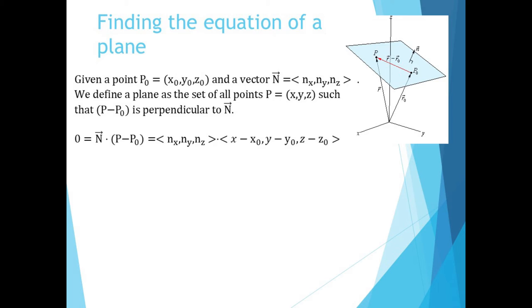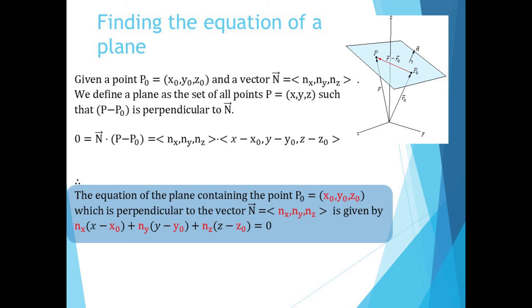For our first application of the cross product, we'll use it to find the equation of a plane containing three points. In 3D, we need a point on the plane and a vector perpendicular to the plane called the normal. A vector joining any point on the plane with our fixed point must be perpendicular to our normal. So if n equals nx, ny, nz, and p0 equals x0, y0, z0 is our fixed point, then all the points p on the plane satisfy (p minus p0) dot n equals zero, and the equation for our plane is nx(x minus x0) plus ny(y minus y0) plus nz(z minus z0) equals zero.